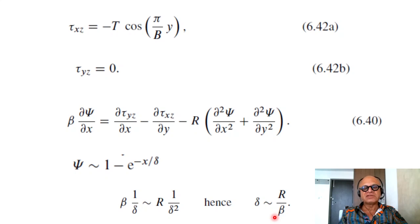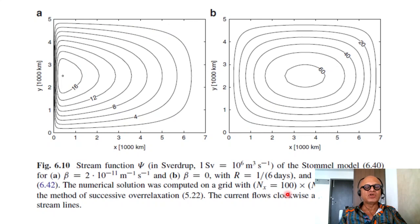So, in the Stommel model, the intensification of the boundary layer, which is what we are looking for, in terms of the squeezing of the streamlines, is proportional to r over beta. And, we don't look for an analytic solution here, we look for a numerical solution, so this is stream function psi in Sverdrups, where one Sverdrup is 10 to the 6 meter cube per second. For some reference, the Gulf Stream, as it passes between Florida and Cuba, has a volume transport of about 100 Sverdrups. How large is it? The Amazon, which is one of the biggest rivers, has a volume transport of only 0.2 Sverdrups. So, just imagine, 500 times the transport of the Amazon goes through the Gulf Stream there.